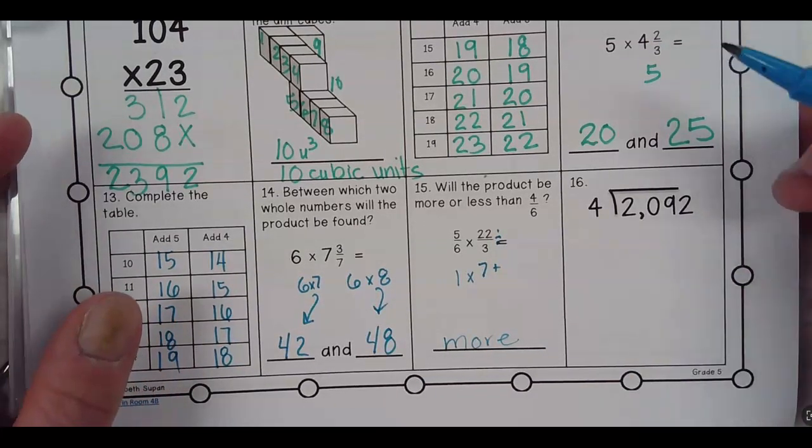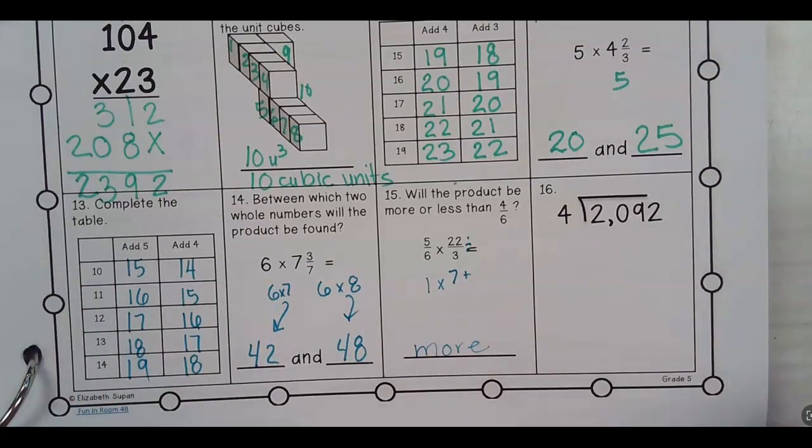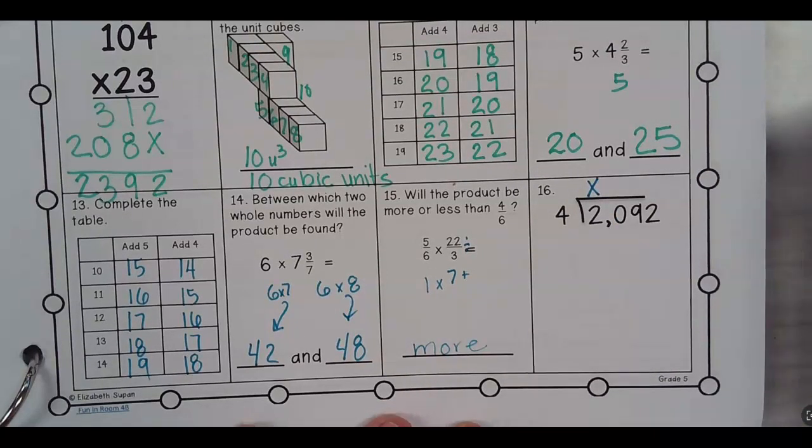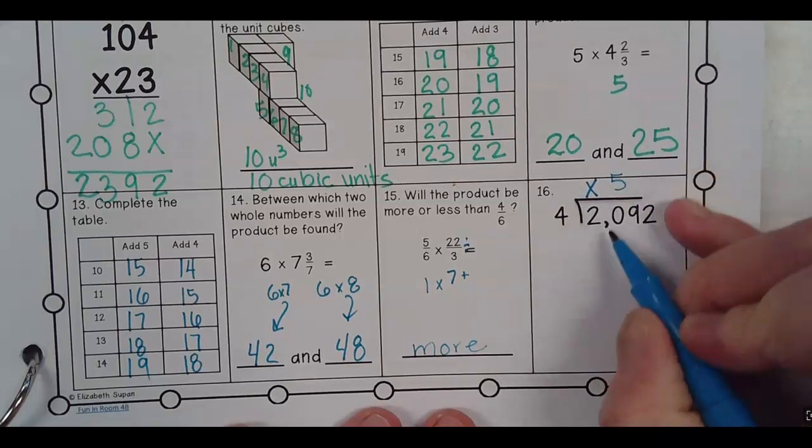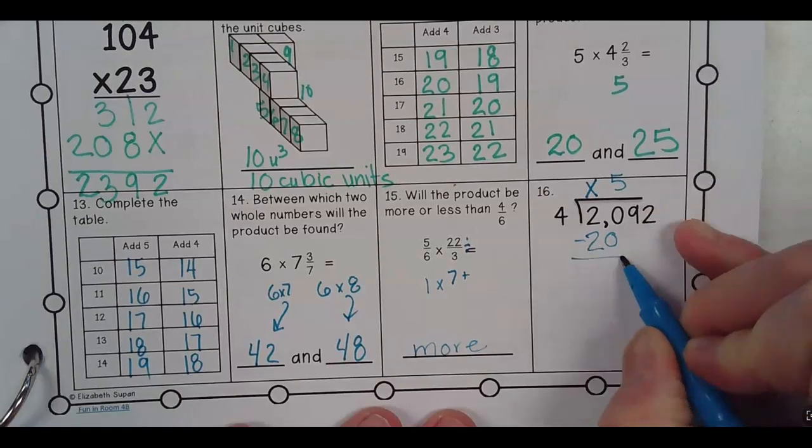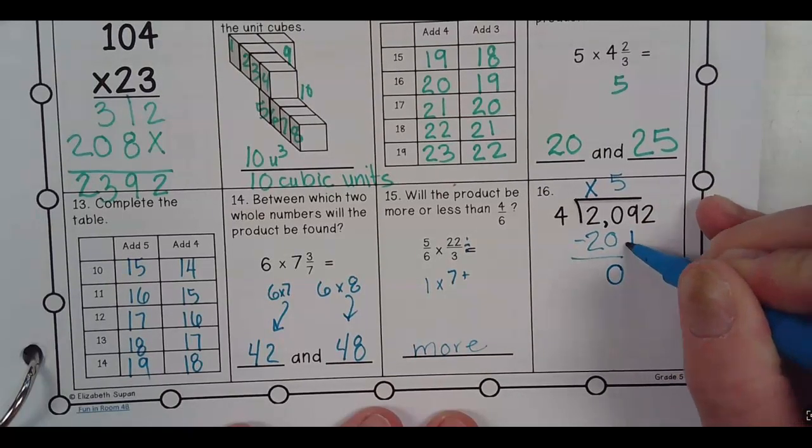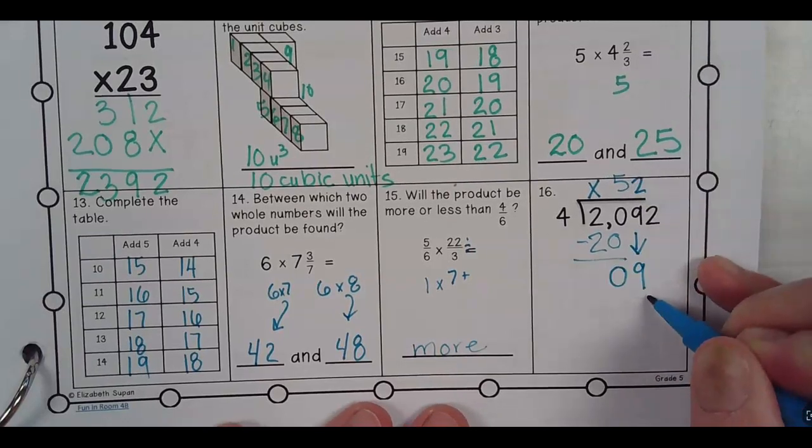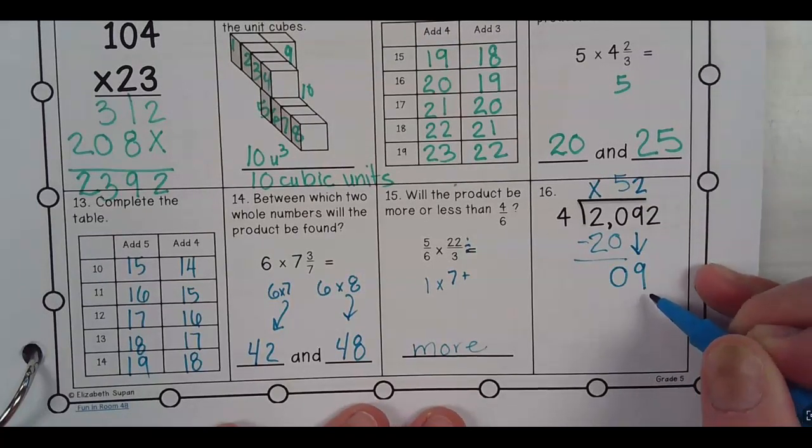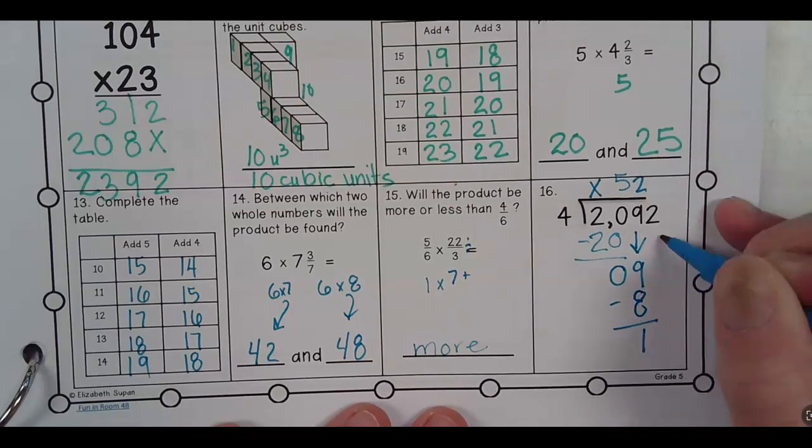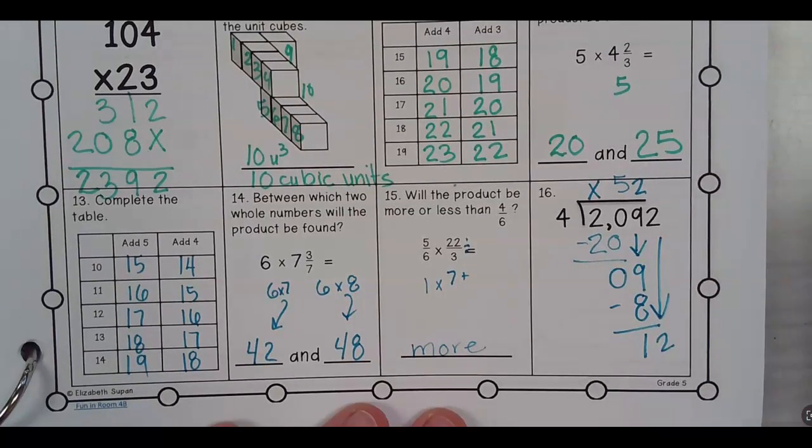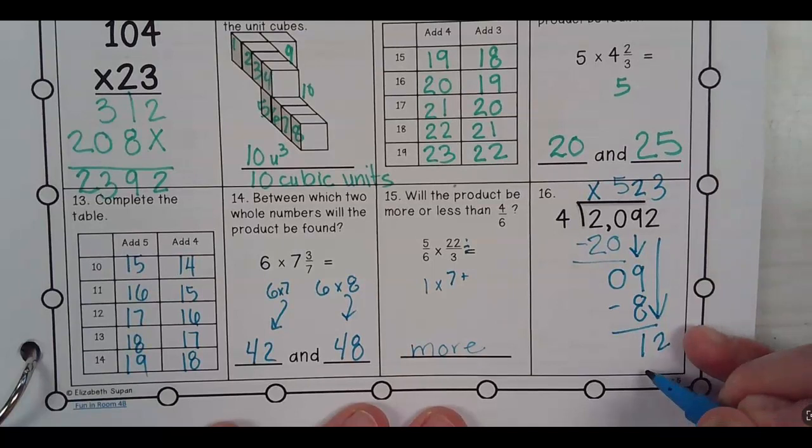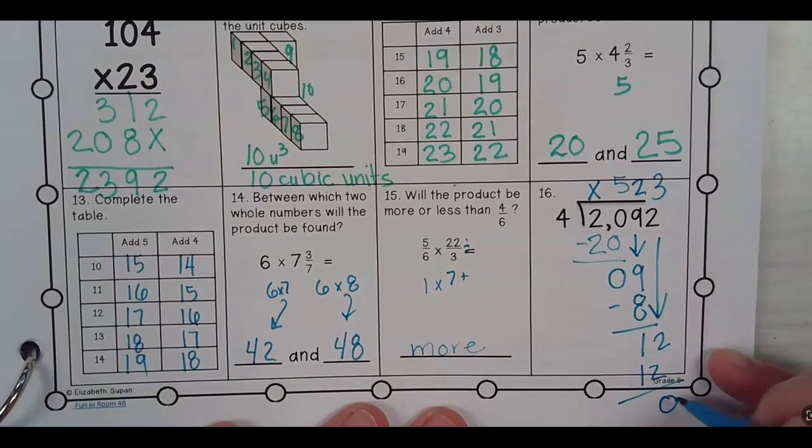And then, how many times will 4 go into 2? It won't. So, I'm going to put an x there. How many times will 4 go into 20? 5 times 4 is 20 minus 20 is, bring down my 9. 4 goes into 9 how many times? 2 times 4 is 8. 9 minus 8 is 1, bring down my 2. How many times will 4 go into 12? 3 times 4 is 12 minus 12 is 0. Well done, my friend. Well done.